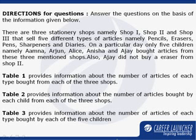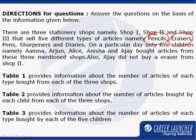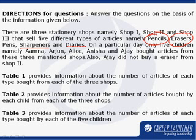Let us see this set of questions. It says there are three stationery shops: Shop 1, Shop 2, and Shop 3. They sell five different types of articles: pencils, erasers, pens, sharpeners, and diaries. On a particular day, only five children — Amna, Arjun, Alish, Anisha, and Ajay — bought articles from these three mentioned shops at the same time.